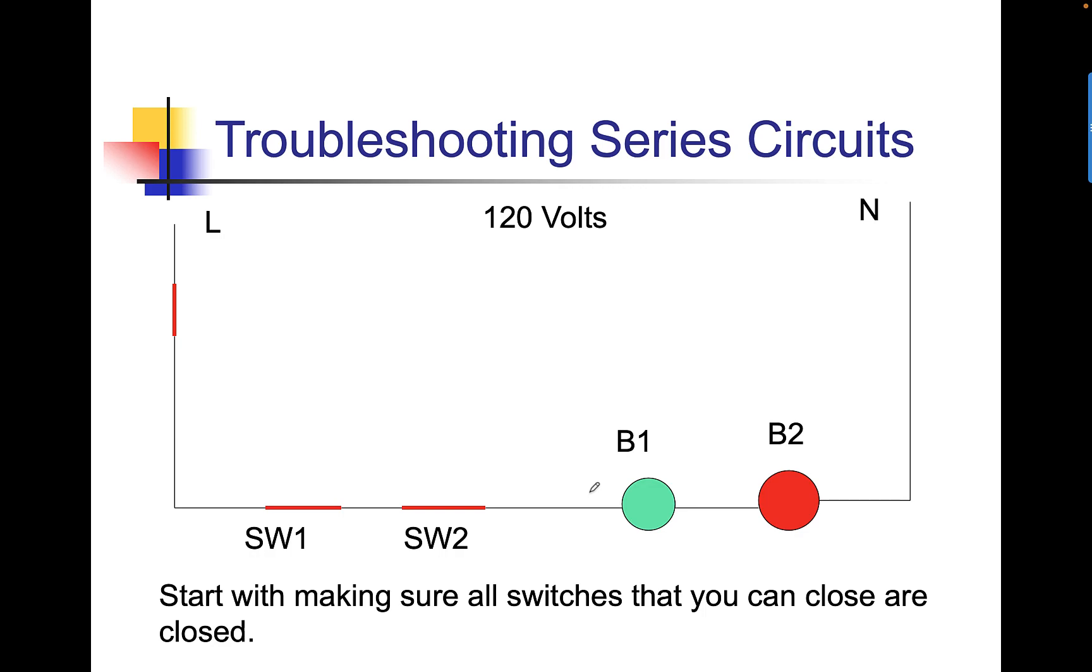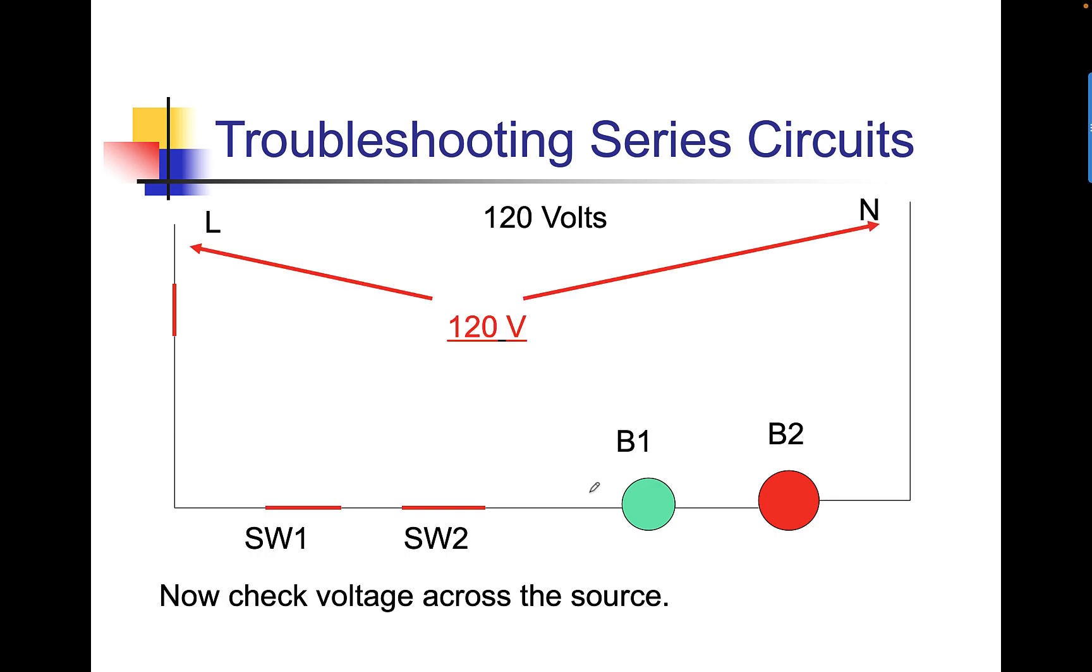So when you're troubleshooting a series circuit, start by making sure all the switches that you can close are closed. And the reason I say that you can close is because a lot of times switches are part of devices and you might not be able to see if they're open or closed just by looking at them. You've got to use your meter. Now check voltage across the source. That's the number one spot. Check voltage across the source. Then go across every switch. Note that I'm leaving one meter lead right on line because from our last lesson on meters, we know that voltage across a closed switch is zero. Voltage across an open switch is source. So we're going to go across and we're going to just continue hopscotching through the circuit.